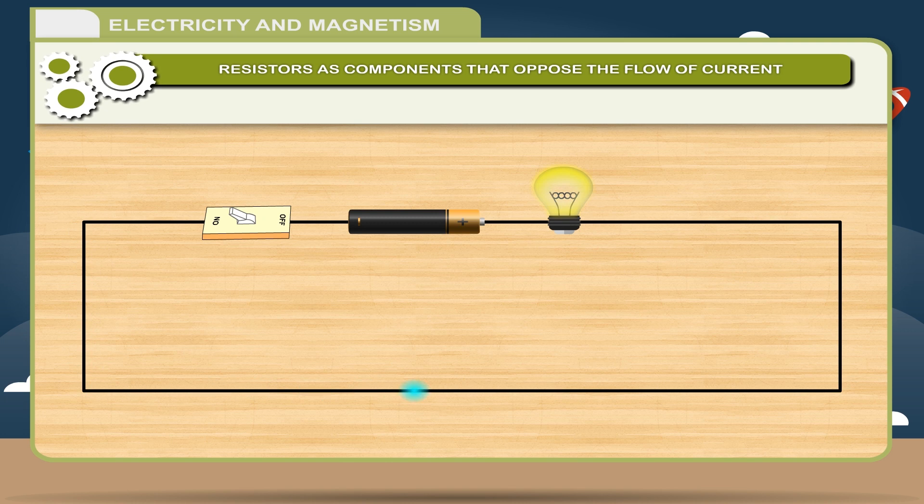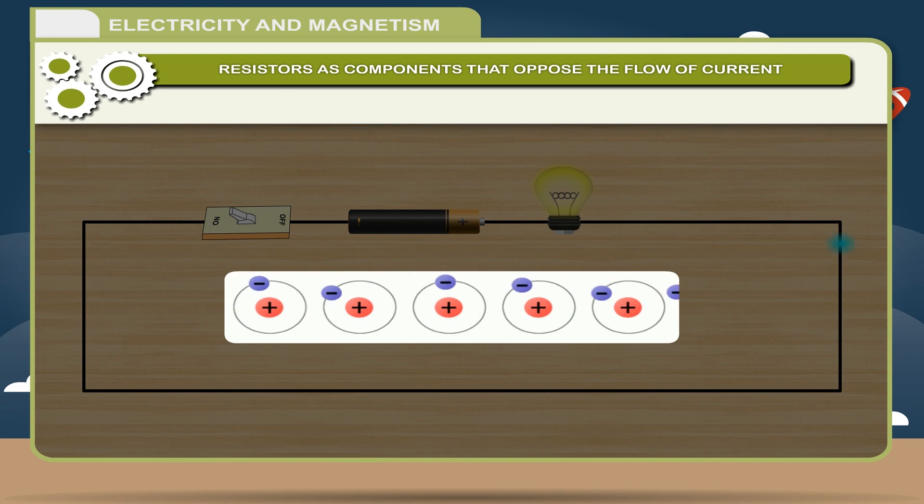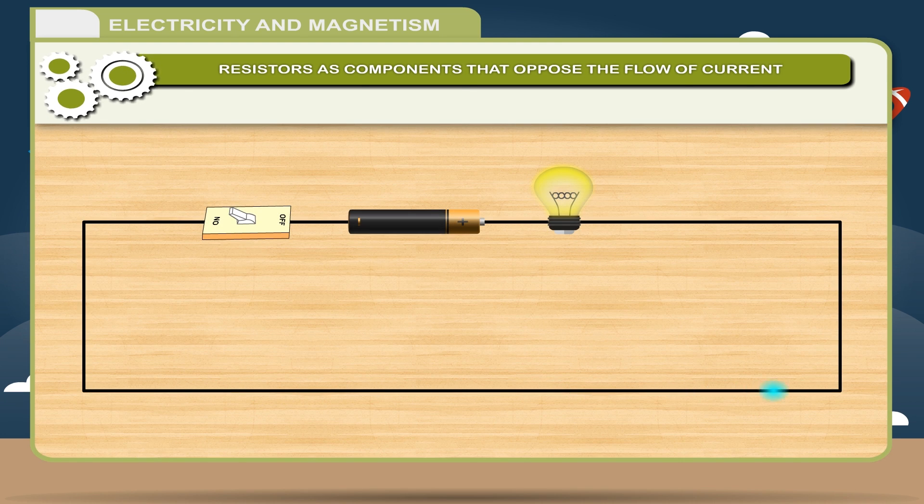Actually, the flow of current in a wire is due to the drift of electrons. Electrons collide with the atoms of the wire as they move through it. The speed of electrons decreases due to these collisions. Thus, the rate of flow of charge slows and current decreases.